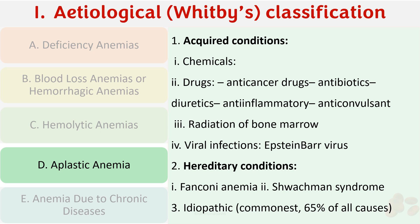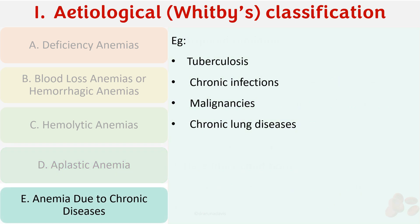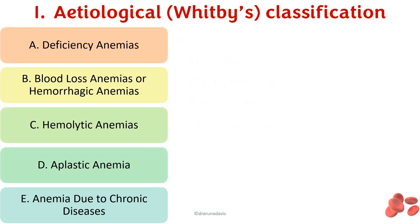Finally, anemia due to chronic diseases occurs when the patient has chronic conditions like tuberculosis, chronic infection, malignancies, or chronic lung disease. These are the five categories of the etiological, or cause-based, classification of anemia.